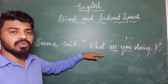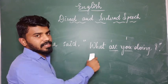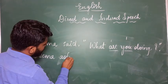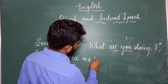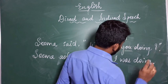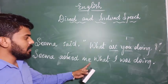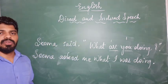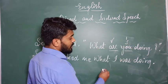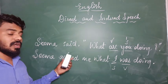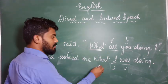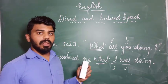Whenever there is a WH question, you need to use the same WH word when you convert direct into indirect. For example: Seema asked me what I was doing. In the interrogative sentence we do not use 'that.' Here the verb and subject have swapped — it becomes subject and verb. This is the change you need to make when converting an interrogative sentence from direct to indirect speech. The interrogative pronouns remain the same; you should not make any changes. That is all about interrogative sentences.